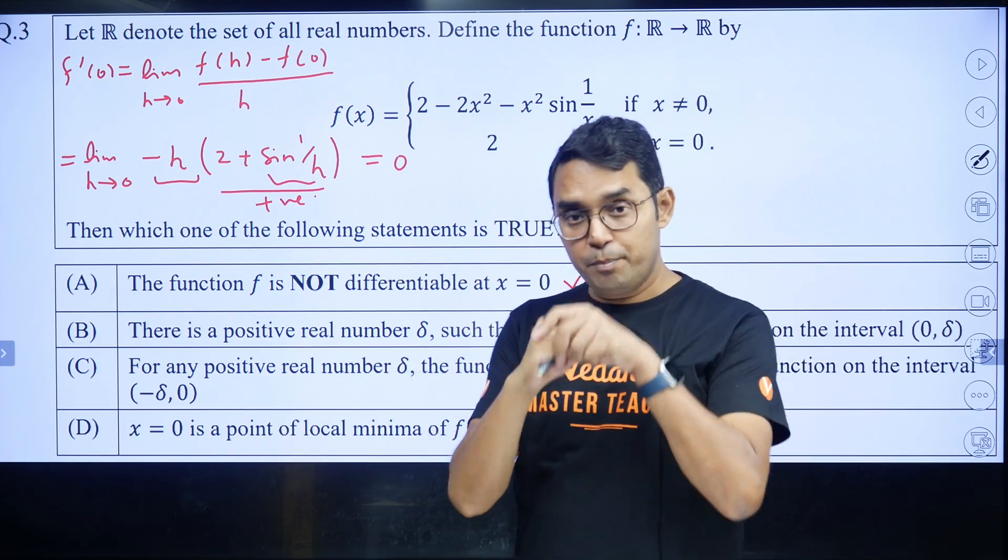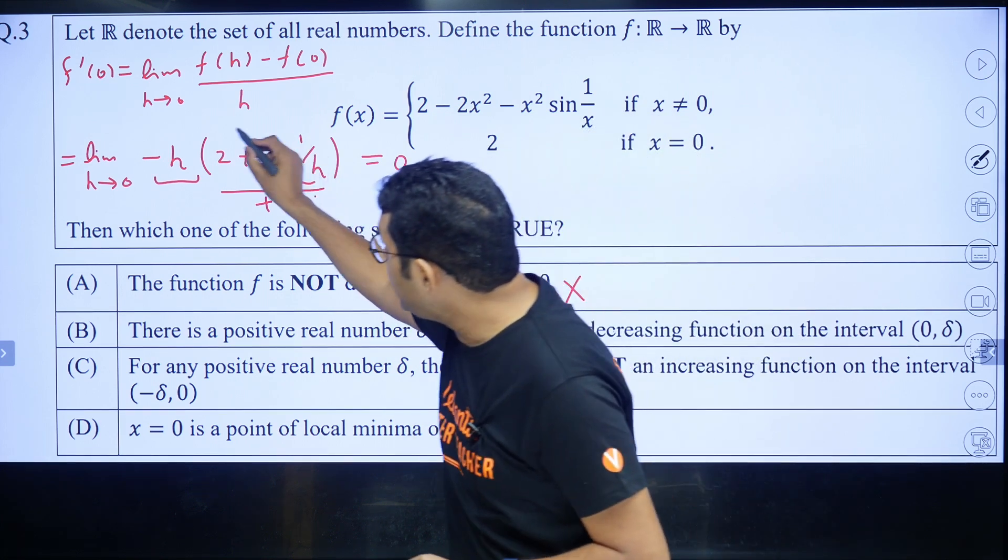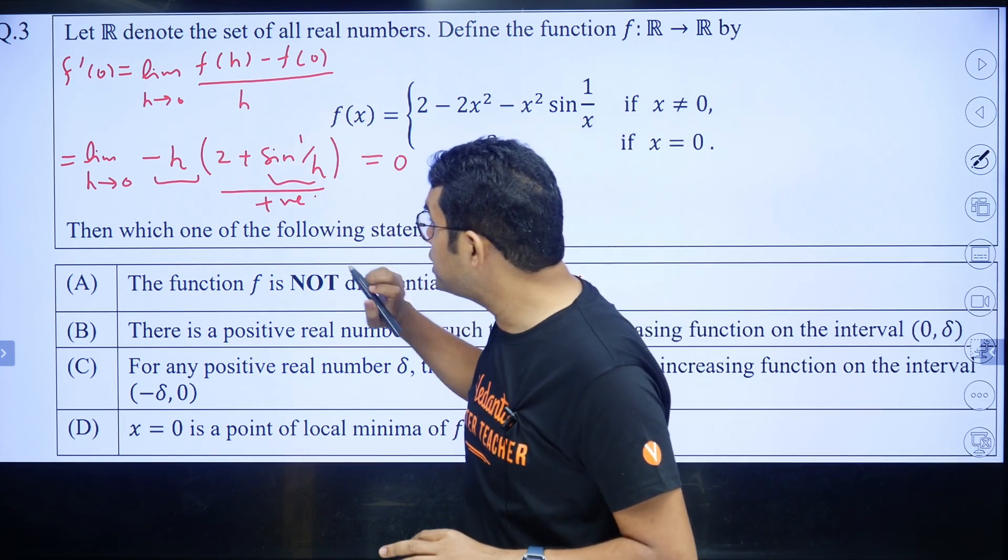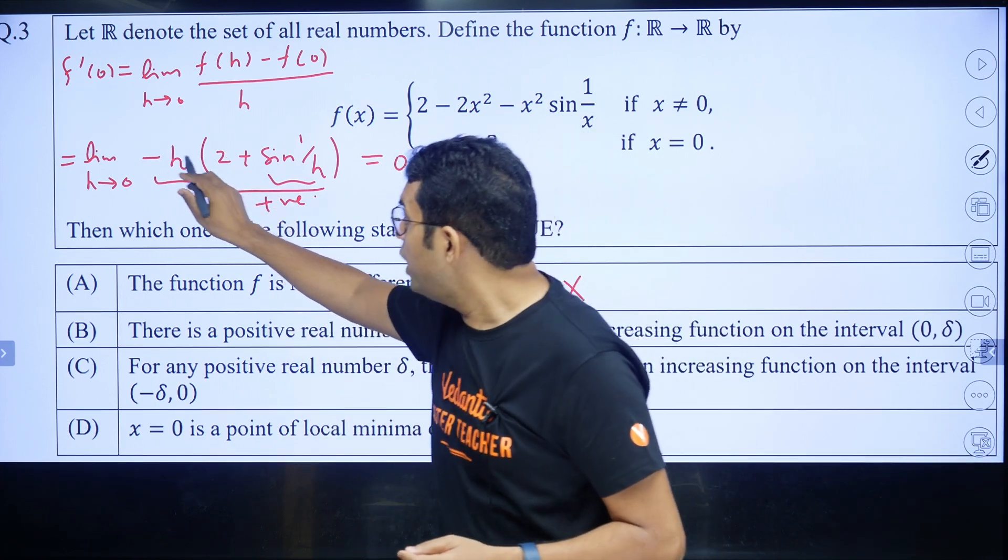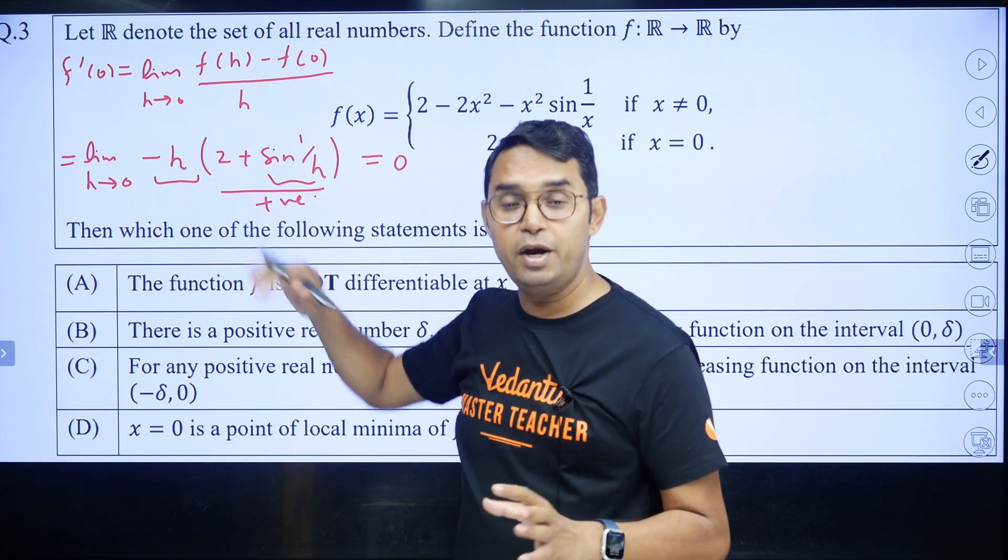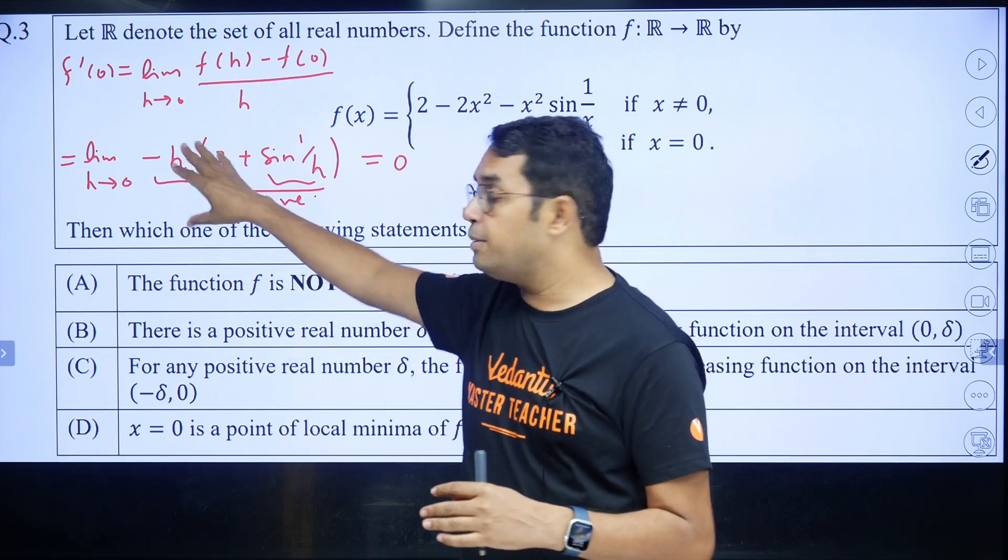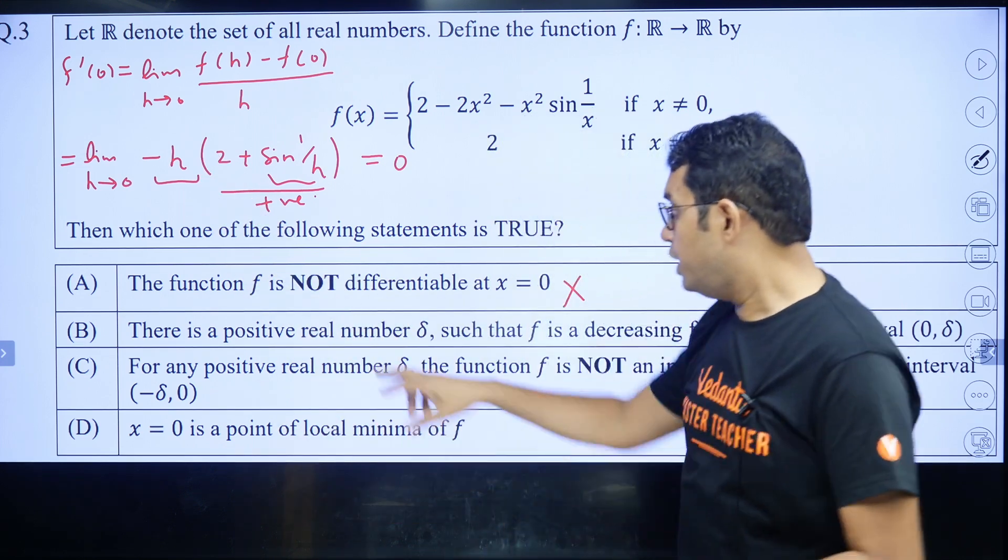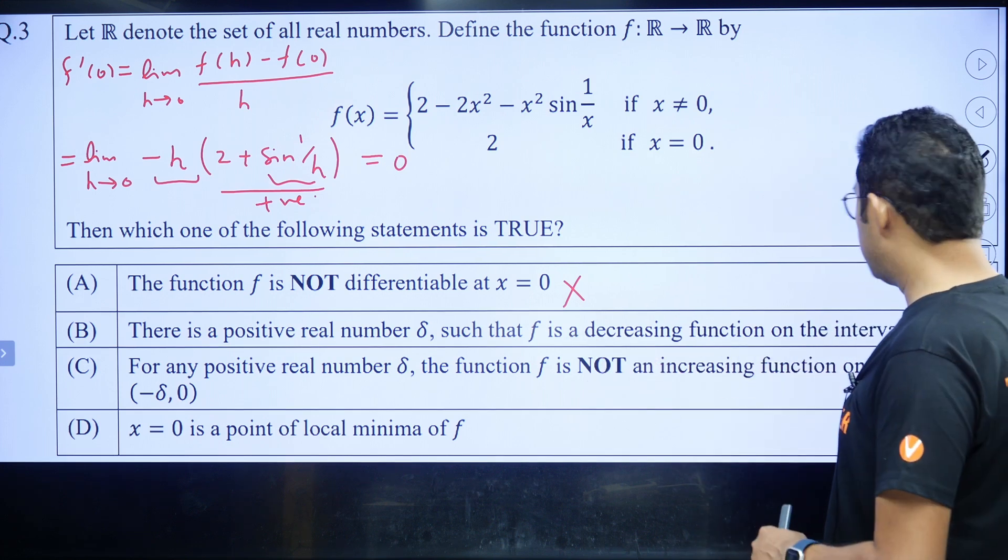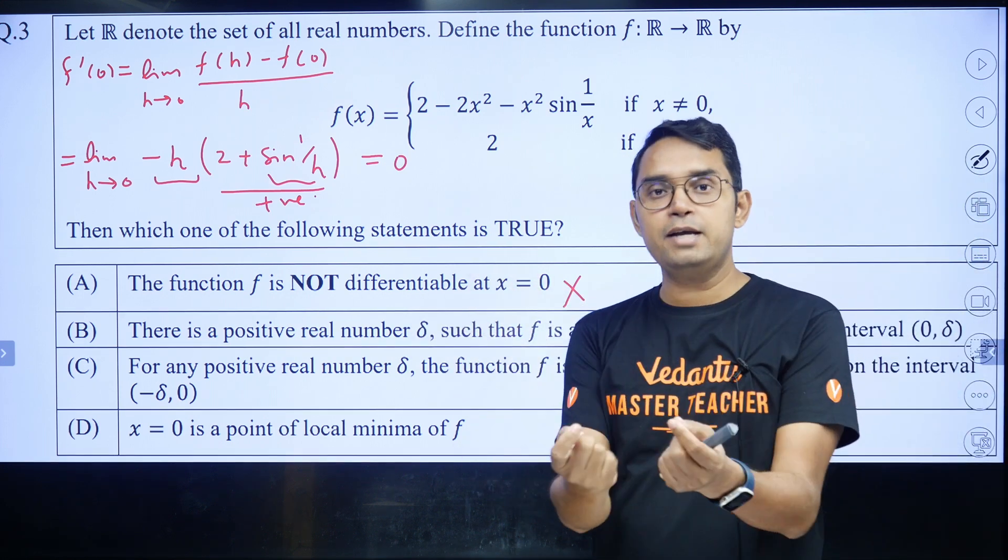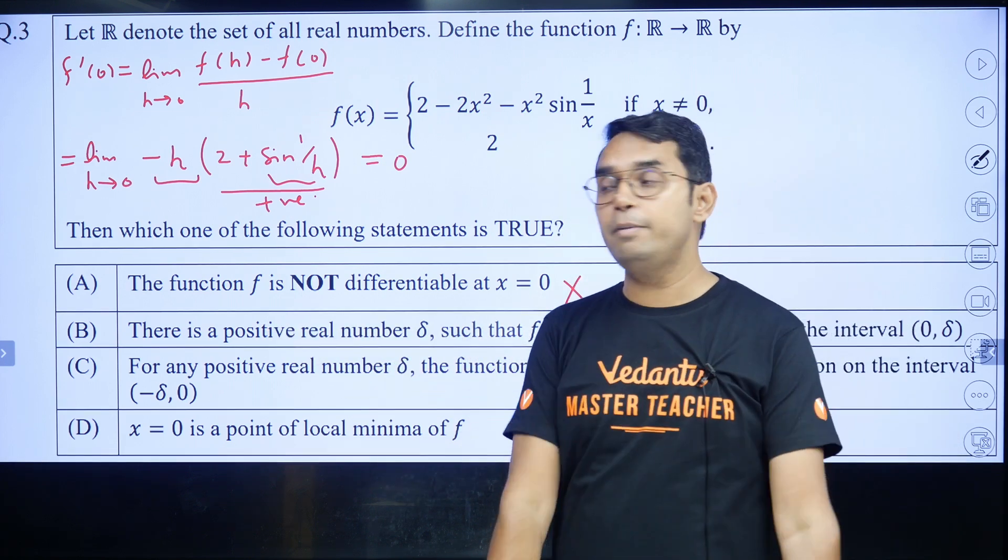Now, option B. Many people have made one mistake. First, I will mention that mistake. By taking this expression, if you are taking RHD (right-hand derivative), your h will be positive. And because of the minus sign, the entire thing will become negative. So it looks like the function will be decreasing for some positive h. Option B says there is a positive real number δ such that f is a decreasing function on the interval (0, δ). So it looks like if I take very small δ, option B will become correct. That is absolutely wrong.